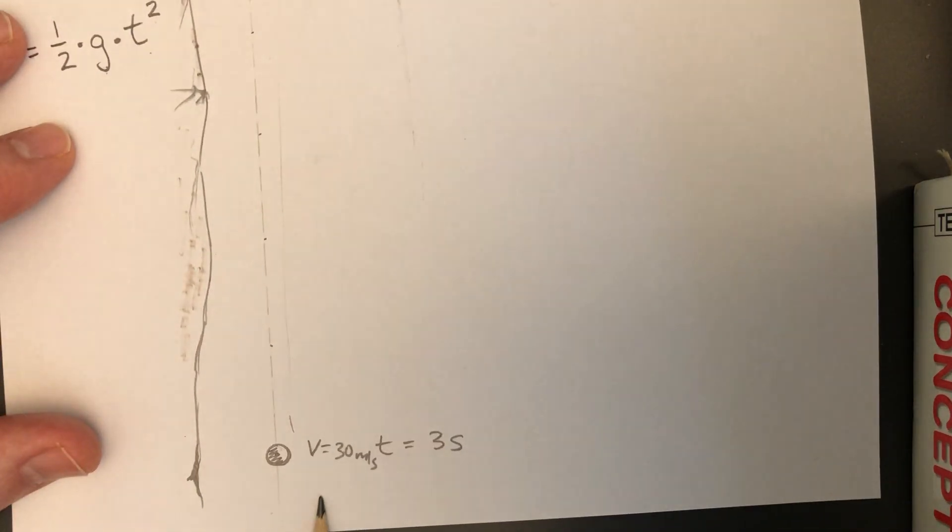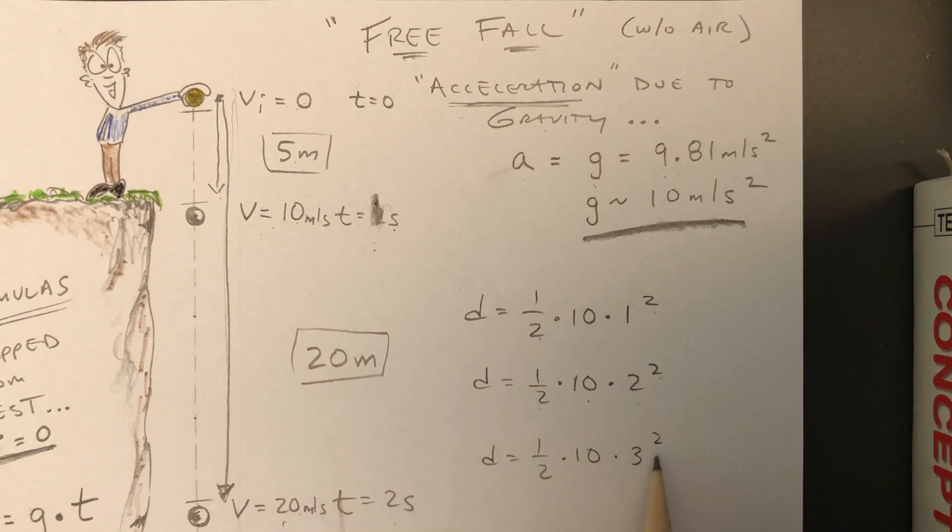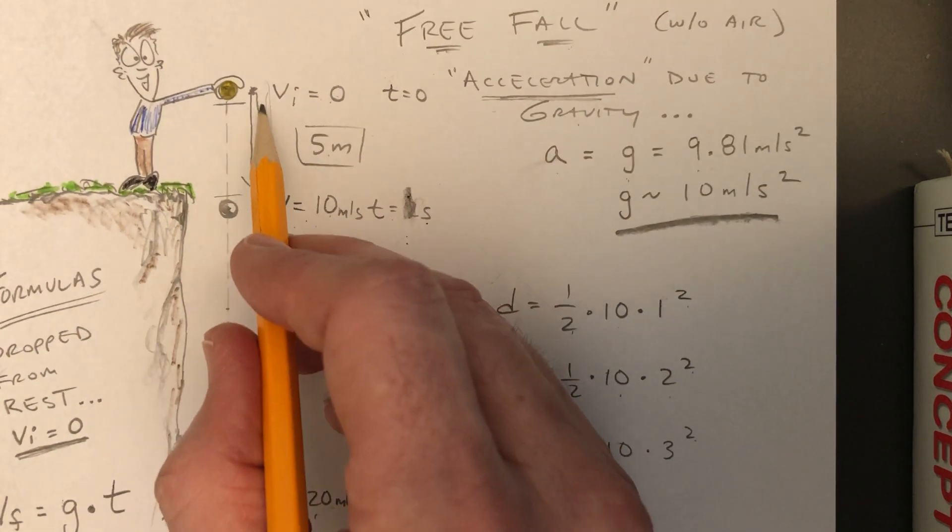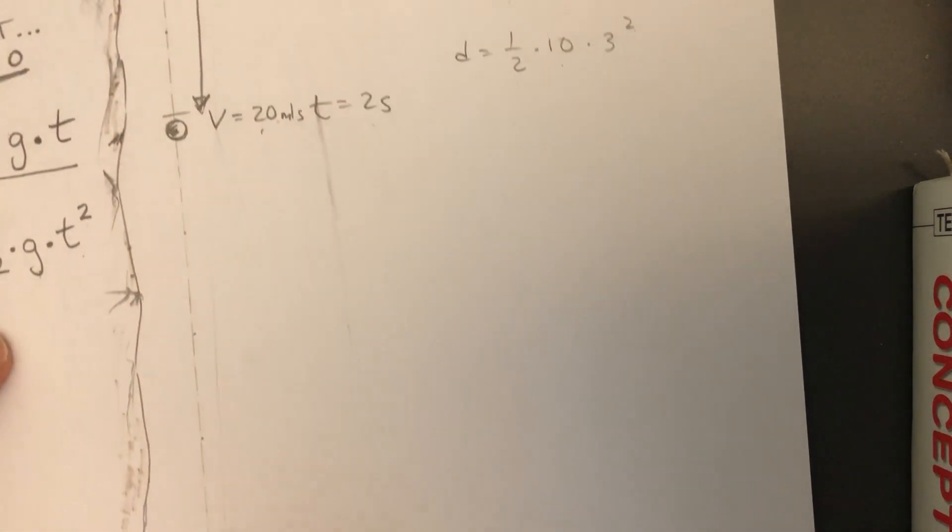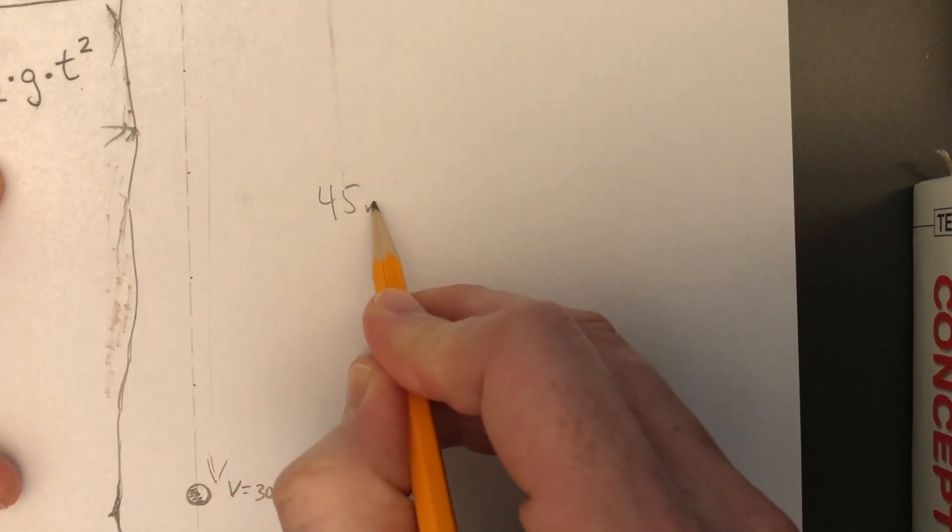What about from zero all the way down to the bottom, all the way down to thirty? Well, again, coming back to this formula, d equals one-half, ten, three squared. Three times three is nine, times ten is ninety, take half. So all the way from here, all the way down here to the very bottom, all of that distance would be forty-five meters.